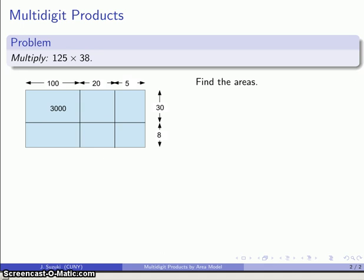Well, if I want to find the actual product, I need to find the remaining areas. So this rectangle here, 20 by 30. This rectangle here, 5 by 30. This rectangle here, 100 wide by 8 high. This rectangle here, 20 wide by 8. This rectangle, 5 by 40. And those are the areas of the individual pieces, and the sum is the product.